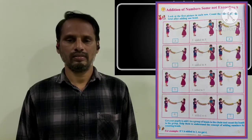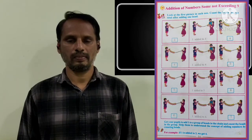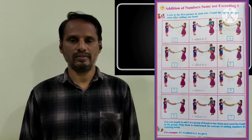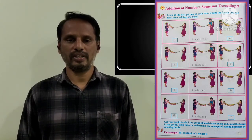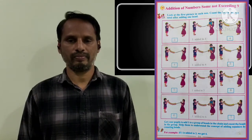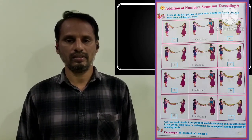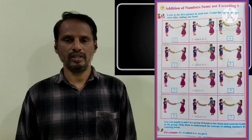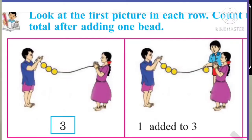Now, all of you take your maths textbook. Open page number 56. Children, what can you observe in this picture? Children, I am taking the first row in this page. All of you see here. How many beads are there? Yes, 3 beads are there. Now let's move to the second box.